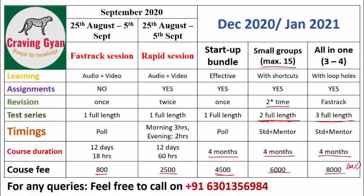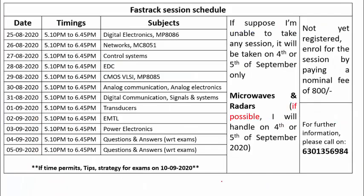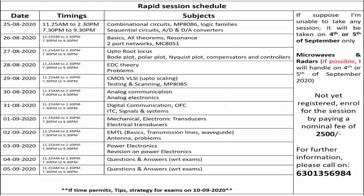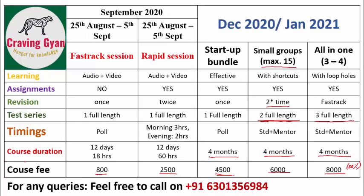Regarding the schedule for the fast track session, it will start from 5:15 and end at 6:45 daily. The course will begin from the 25th of this month and end on the 5th of September. If you are enrolling for the rapid session, the course will also start from the 25th and end on the 5th of September. Both courses will be running parallelly.